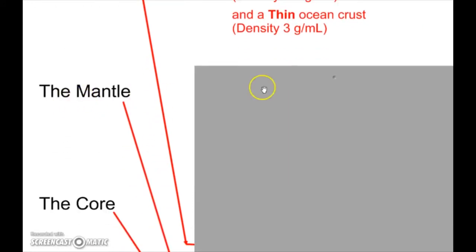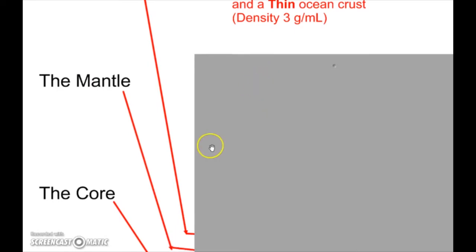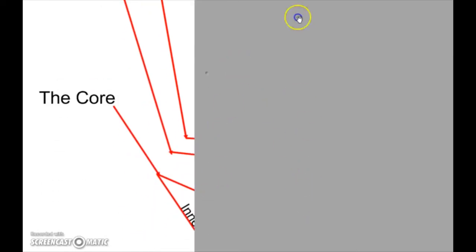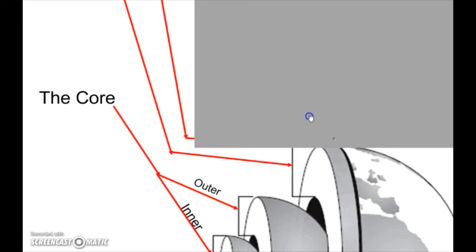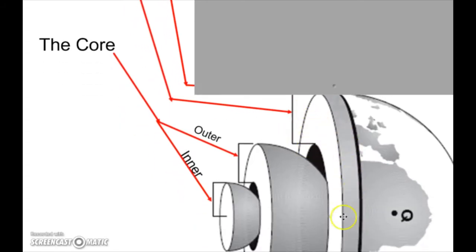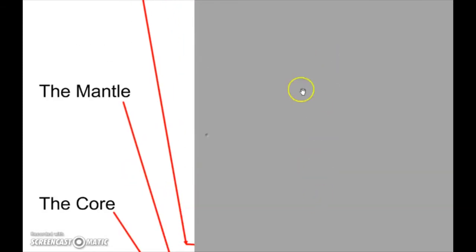The next layer, this is the biggest one, is called the mantle. In the drawing down at the bottom, that's going to be this really thick layer right here, next to the crust. 80% of the Earth's mass is in the mantle.